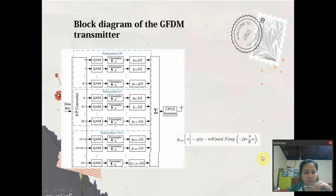This sequence can also be represented as a column vector GKM.